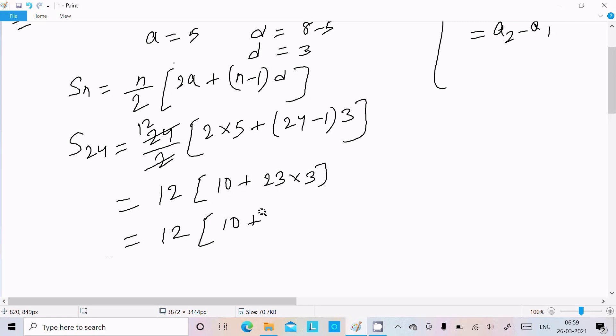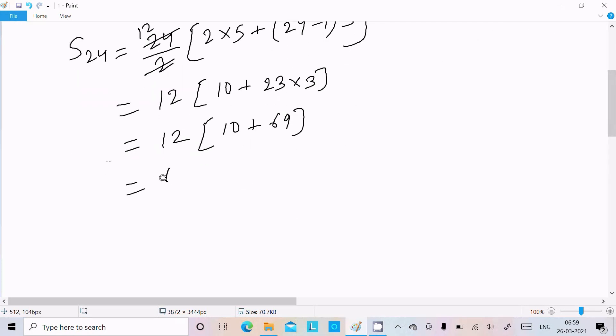...times [10 + 23×3]. Now 10 plus 69 equals 79, so we multiply 12 times 79.